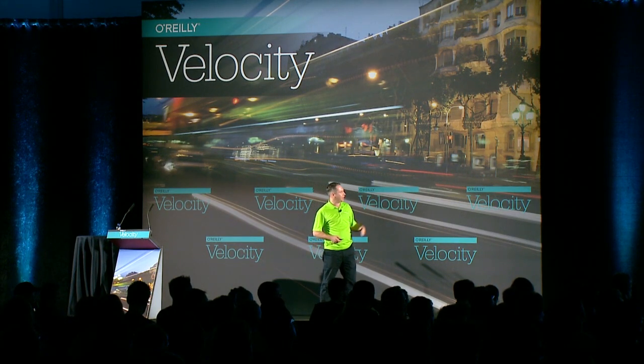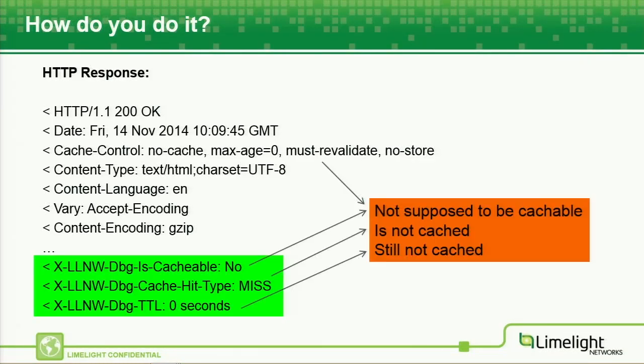Here's a response — I've taken out a load of cookies. What we can see is the cache control header is telling us that this object, the default object from www.5x.com, is supposed to be no-cache with a max age of zero — we're not really supposed to cache this one. So our debug cacheable header comes back and says nope, we weren't supposed to cache that, we didn't think we should have cached it. The hit type is miss, so we definitely didn't cache it, and we've got zero seconds left on our TTL.